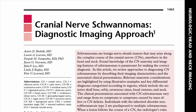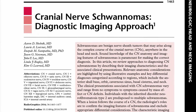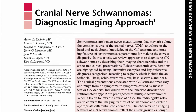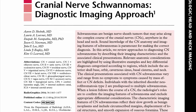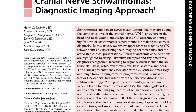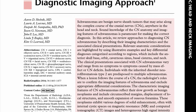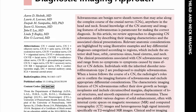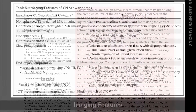Schwannomas are relatively common benign nerve sheath tumors that arise from either cranial or peripheral nerves. The majority of cranial nerve schwannomas arise from the 8th, 5th, and 7th cranial nerves in descending order of frequency.